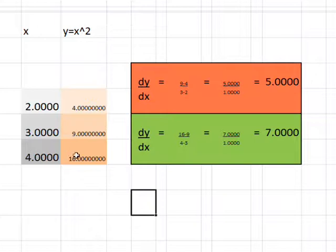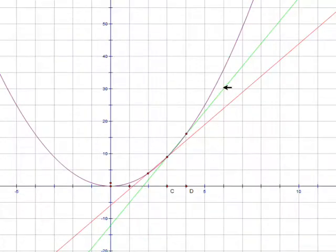Looking at the green line, the difference in y is 16 take away 9, and the difference in x is 4 take away 3. So the gradient is 7 divided by 1, or 7. So the gradient that we're looking for is somewhere between the two gradients there. 7 is the gradient of the green. 5 is the gradient of the red. The gradient of the actual tangent is somewhere between 7 and 5, by the look of it.